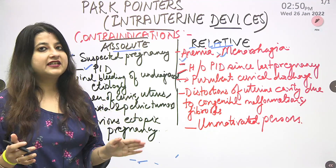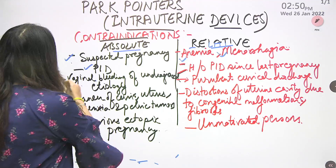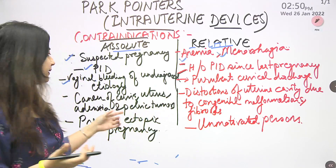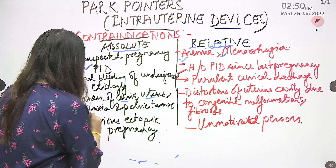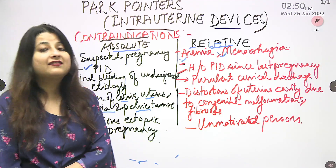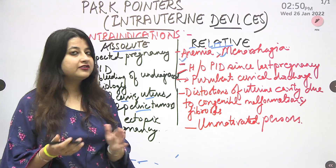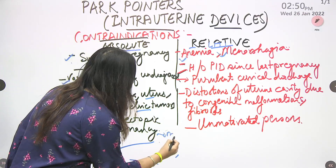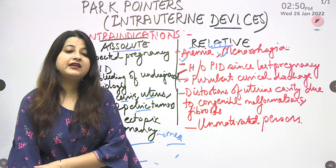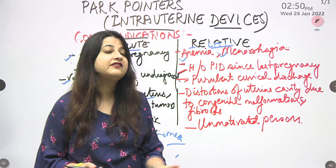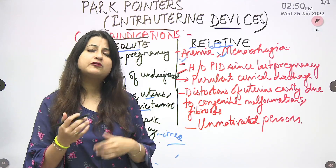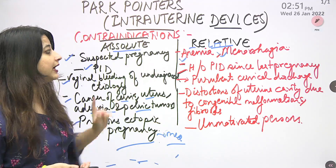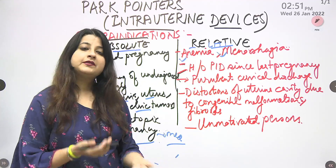The third absolute contraindication is vaginal bleeding of unknown or undiagnosed etiology — if there is bleeding from the vagina and we don't know the cause, an IUD cannot be inserted. Next, cancer of the cervix, uterus, adnexa, and pelvic tumors — if there are cancers or any pelvic tumor, an IUD should not be inserted. Last but not least — and this is a very important MCQ point — previous ectopic pregnancy is not a relative but an absolute contraindication. Many students mark it as relative, but it is actually absolute.